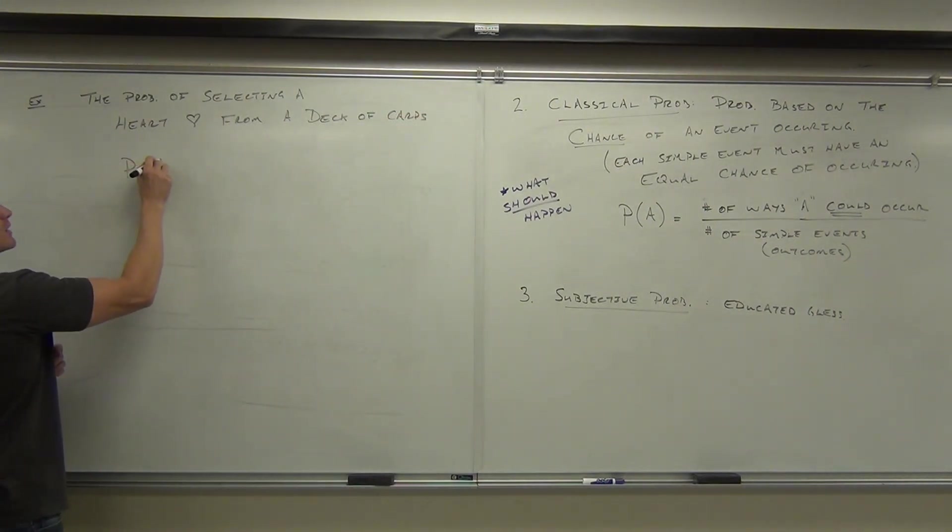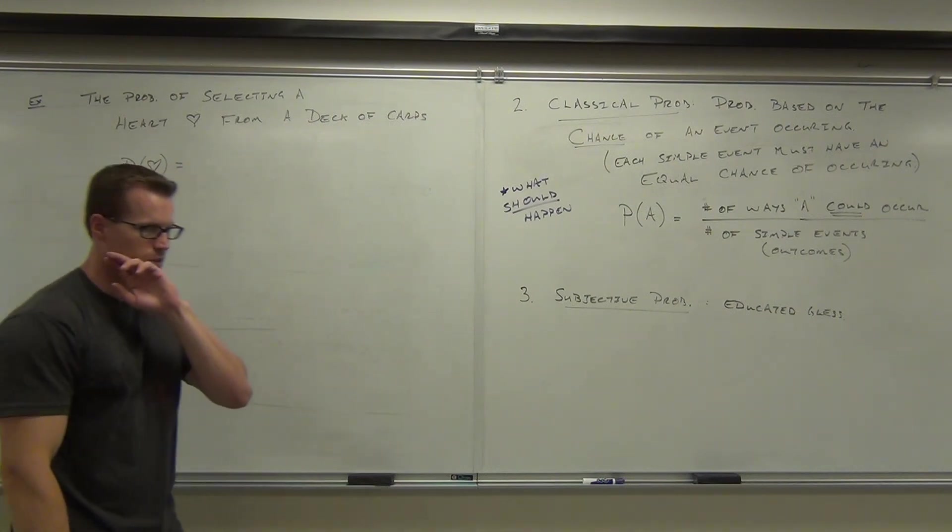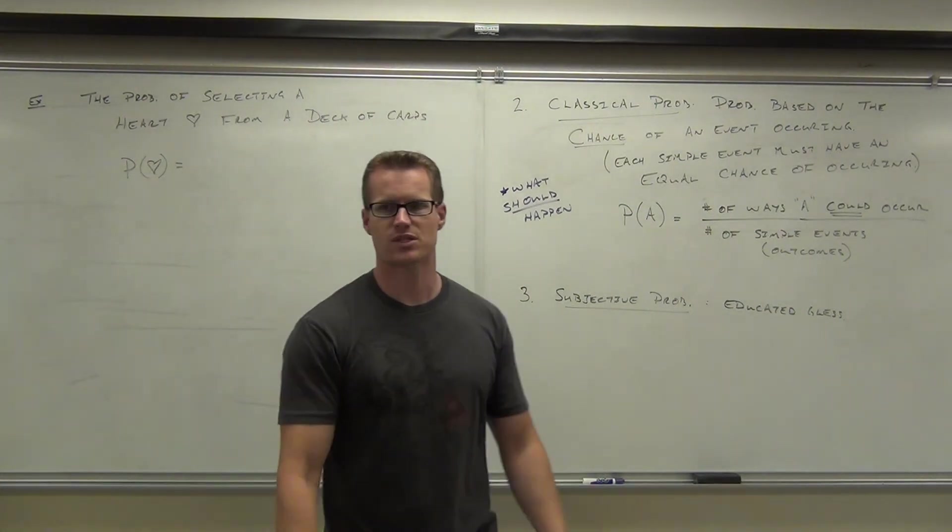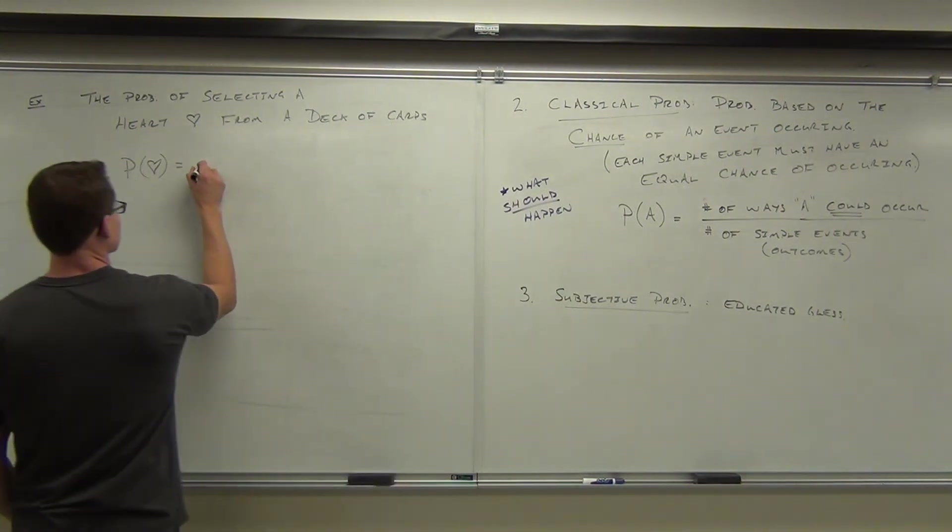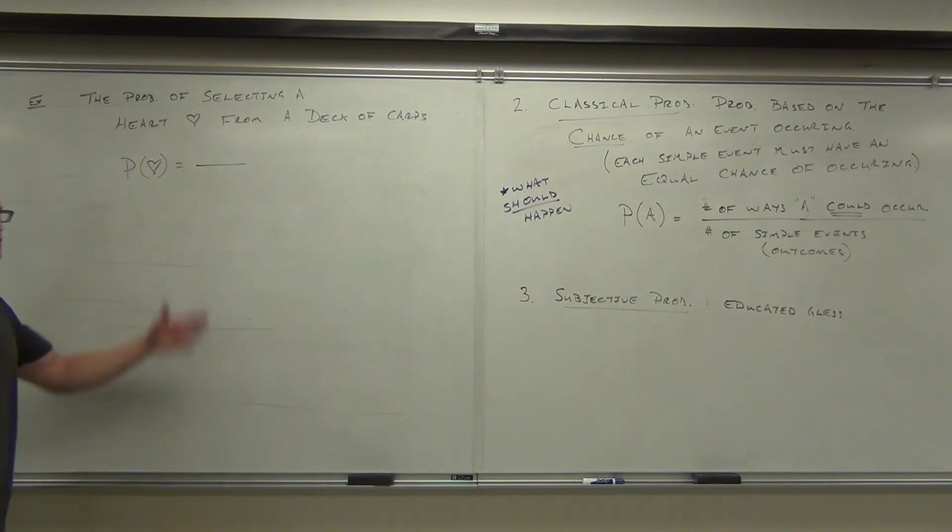Probability of selecting a heart from a standard deck of cards. We want the probability of heart. It's fine to use symbols like that. We don't have to call it event A in this class. We just say we want the probability of finding a heart. I don't mean true love. That is zero.